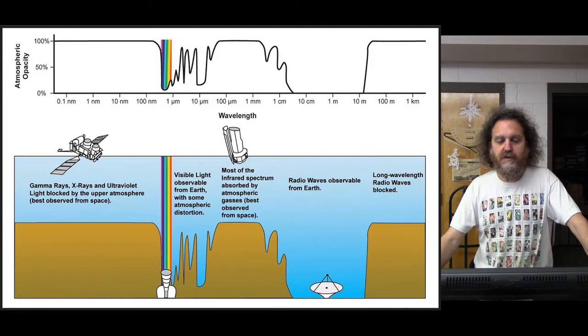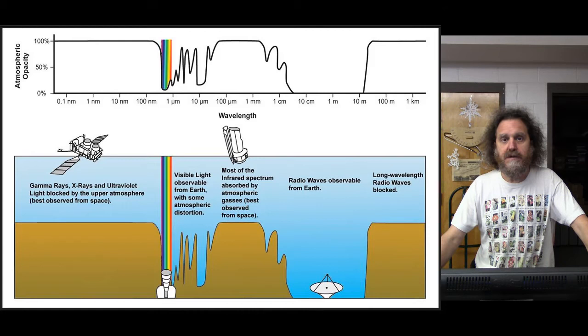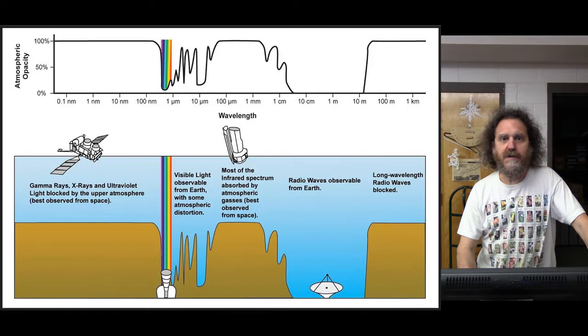As a result of the opacity of the atmosphere to most frequencies, astronomers have had to put telescopes into space in order to see the universe in these various frequencies, like infrared, ultraviolet, X-ray, and gamma ray. I want to show you a few of these telescopes.